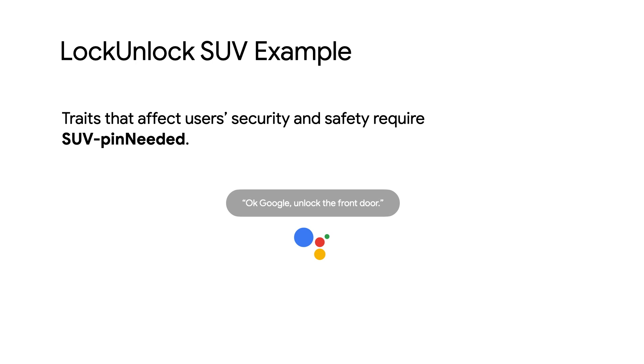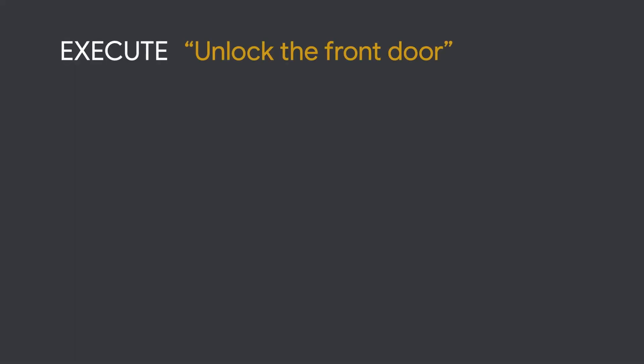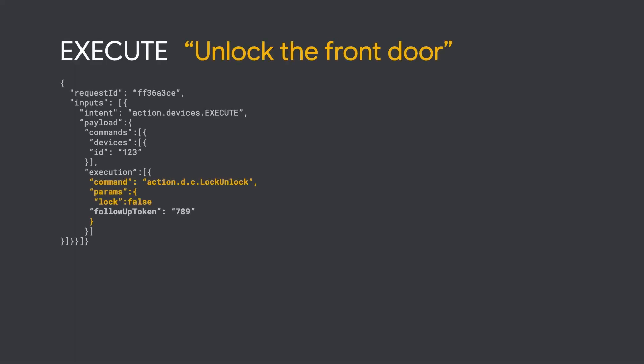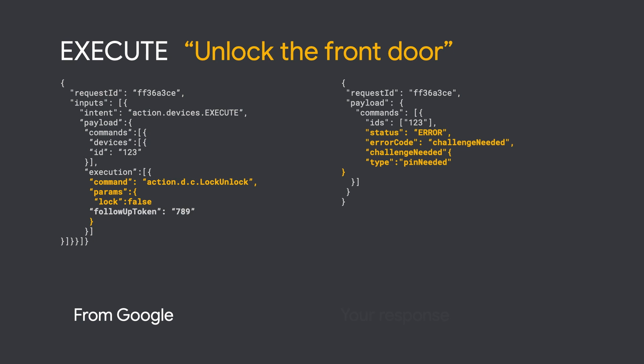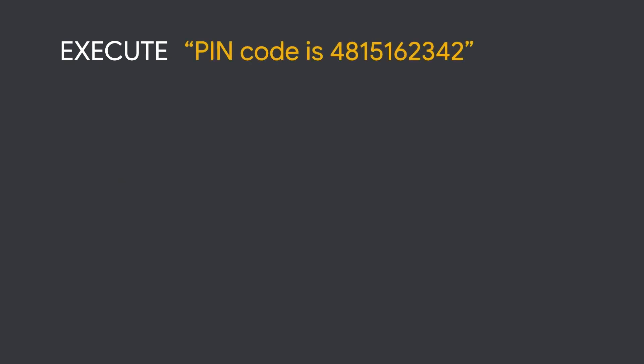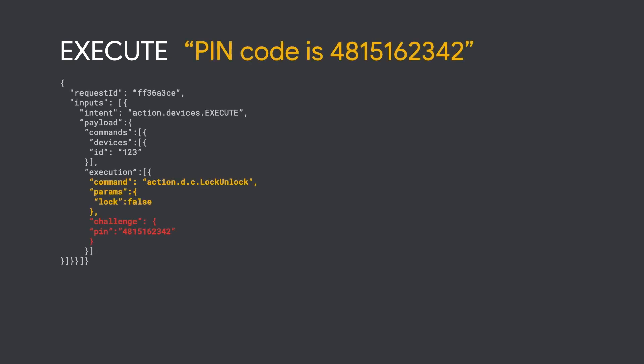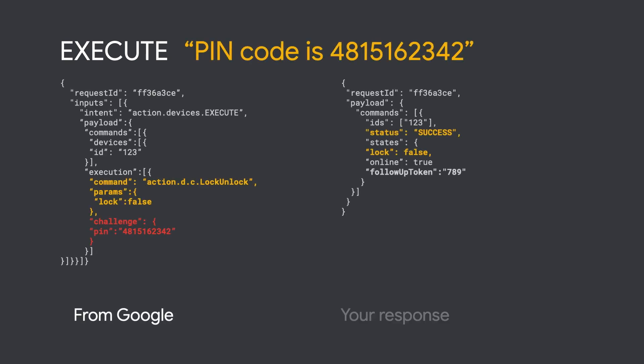Here's a request and response of an utterance that implements PIN needed challenge. By returning the challenge needed error code, Google Assistant will ask the user for their PIN. Google Assistant will then pass the user's response for the developer to validate. If correct, the developer can execute the user request and use the follow response to properly let the user know that the original request was successful or unsuccessful.